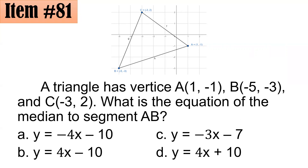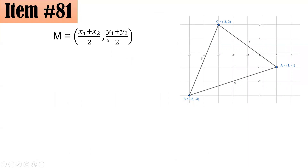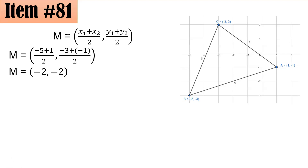Let's discuss the solution. Since we are going to determine the median through AB, it is important that we solve first for the midpoint of segment AB. Using the midpoint formula (X₁ + X₂)/2, (Y₁ + Y₂)/2, we have (-5 + 1)/2 for X and (-3 + (-1))/2 for Y, which simplifies to (-2, -2). Let's call it point M, which is (-2, -2).